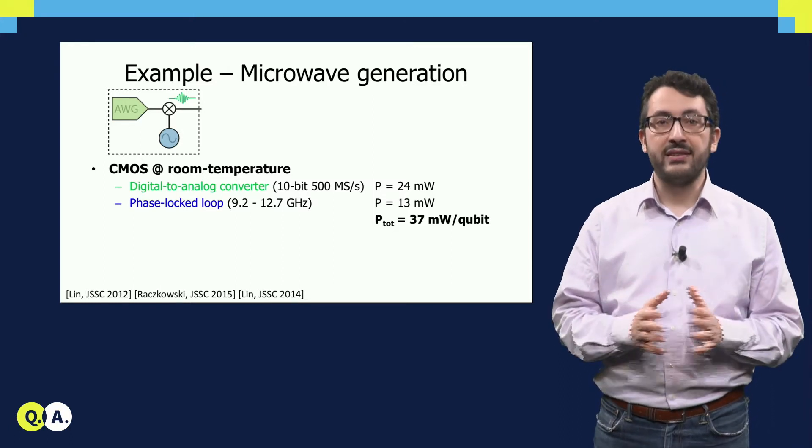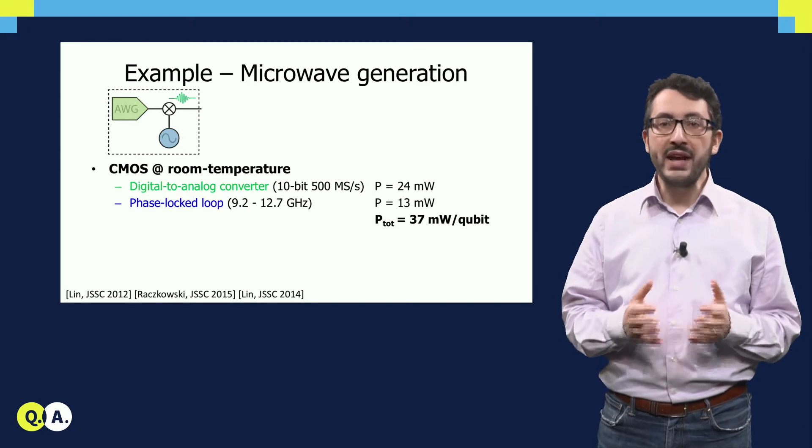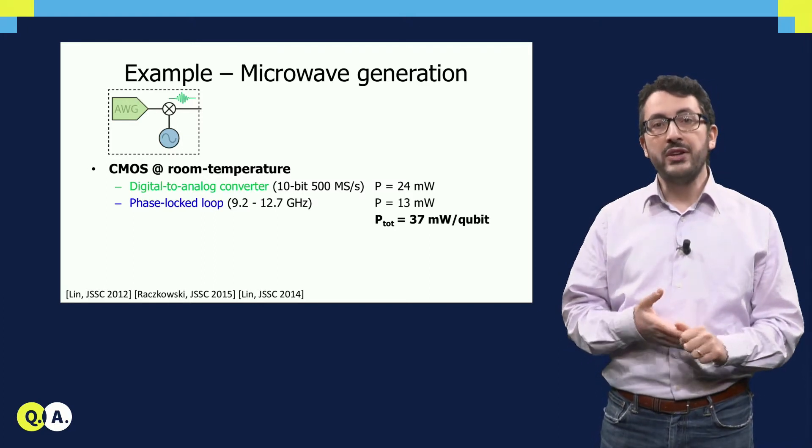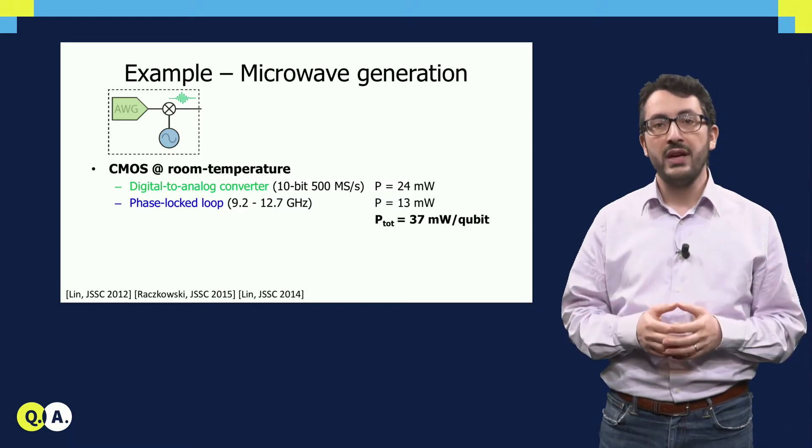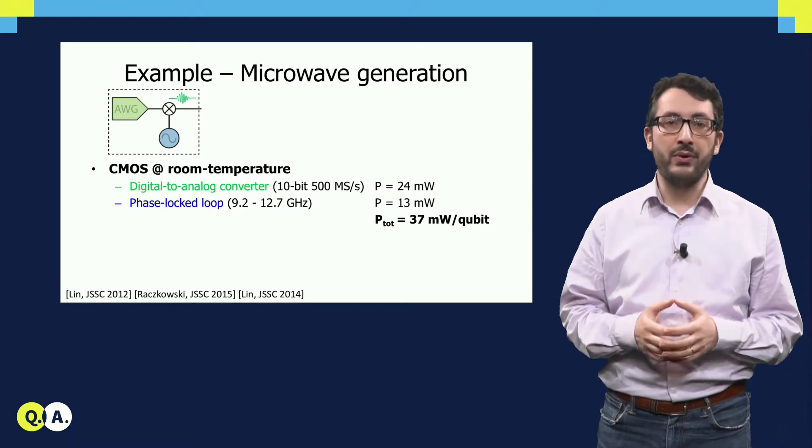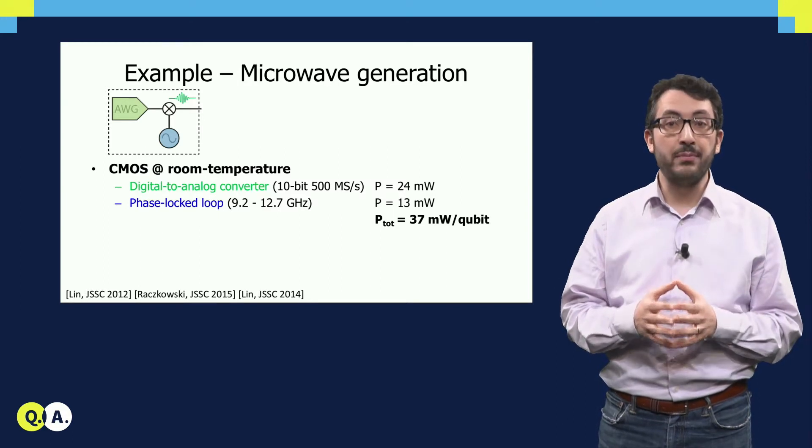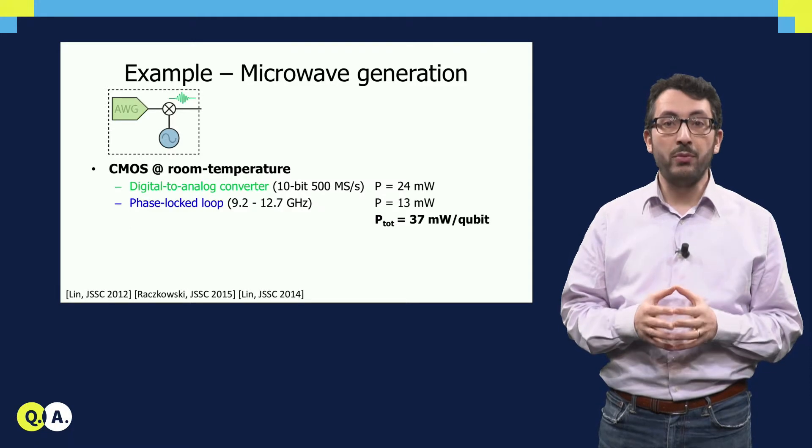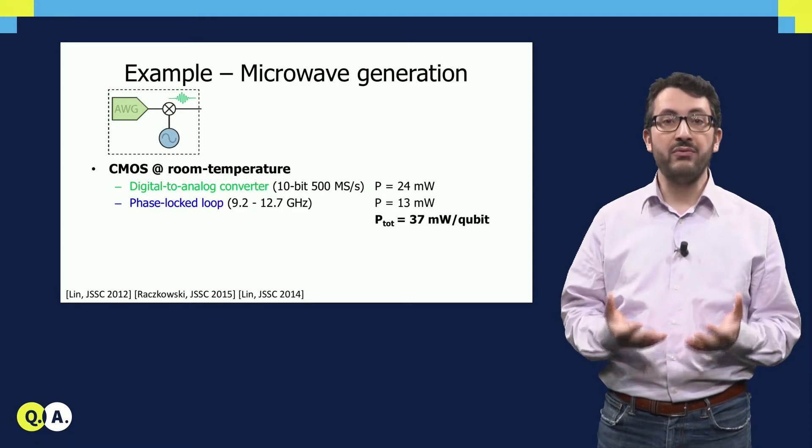So first of all, we can conclude yes, it is possible to make such electronics, but we consume quite some power. We can imagine that if we have to replicate these for thousands or millions of qubits, it's going to dissipate a lot of power. However, if we have to operate such circuits at cryogenic temperatures, we have a problem, because it's not easy to dissipate a lot of power at very low temperatures.